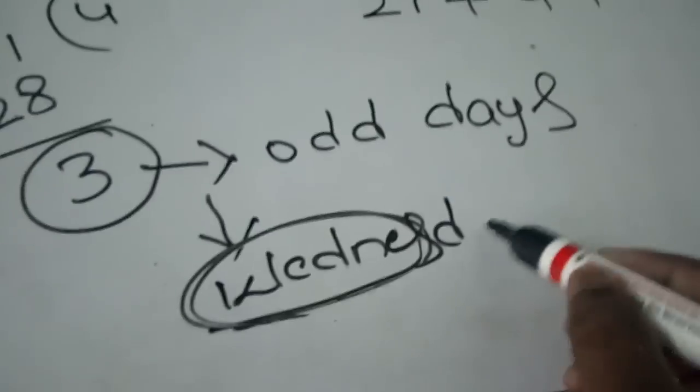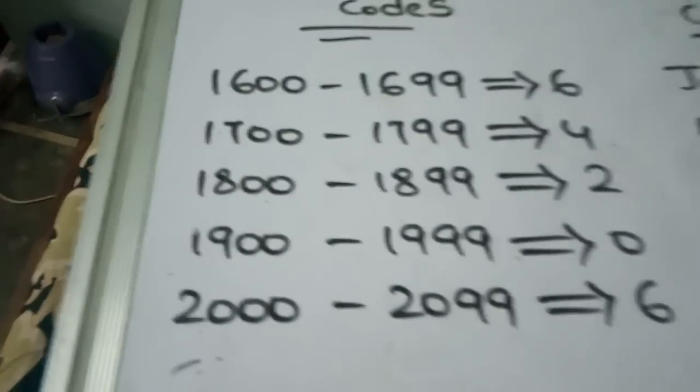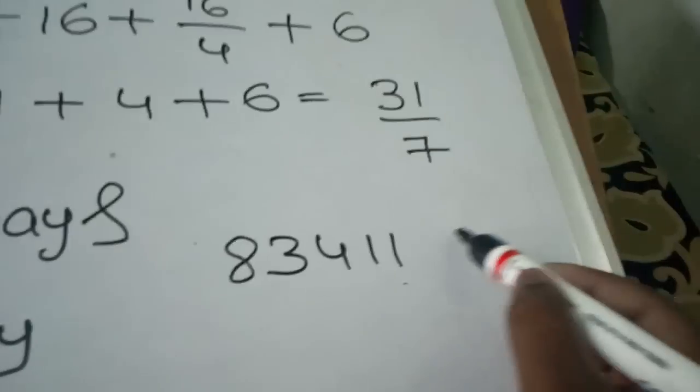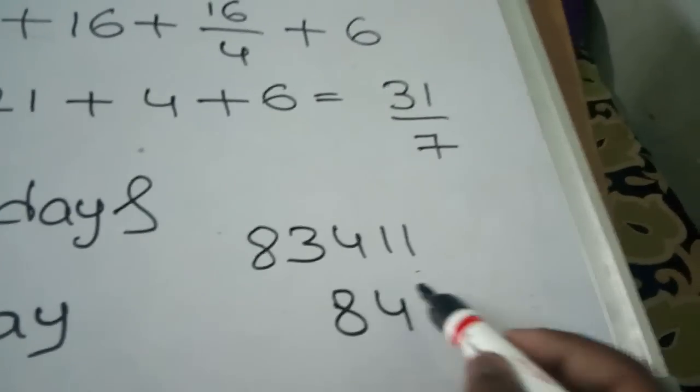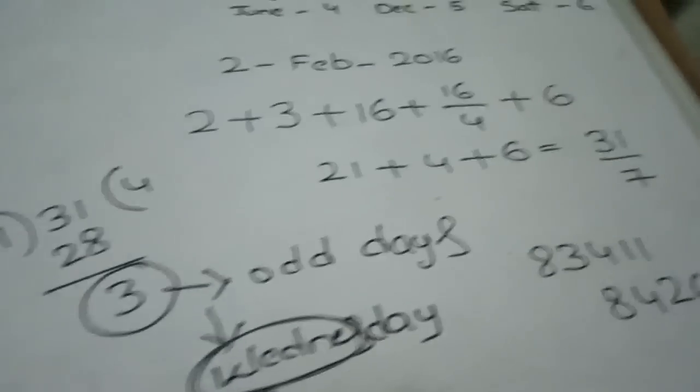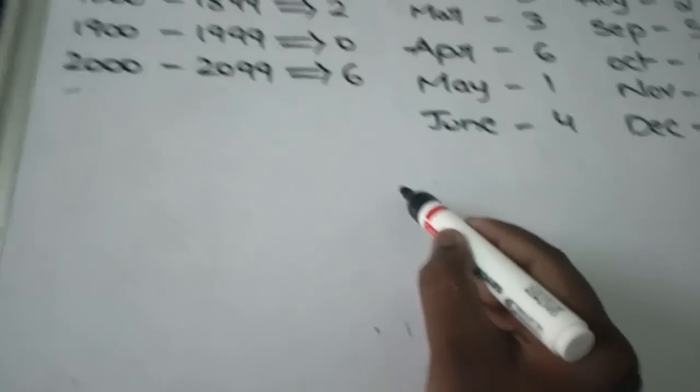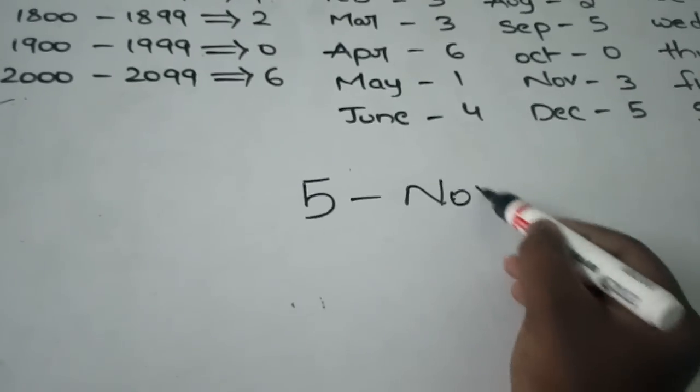That's it! You can calculate the day for any date from 1600 to 2099. If you have any doubt, call my number: 83411-84265. For further clarity, let's take another example date: 5th November 2017.